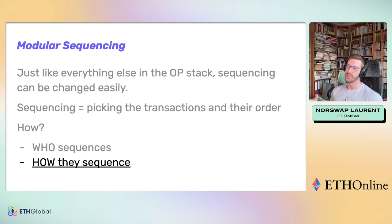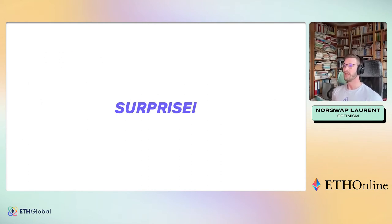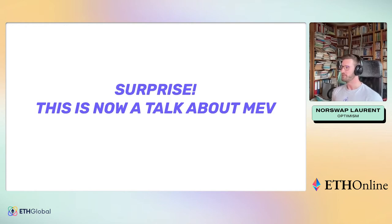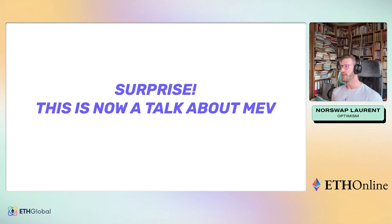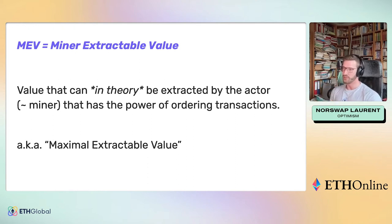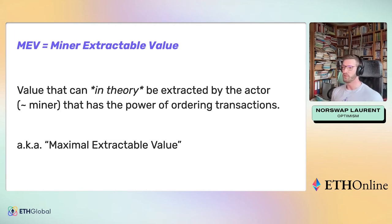Second topic on modular sequencing: what can we sequence? Well, how do we pick the transactions — and surprise, this is actually a talk about MEV. MEV is value that can, in theory, be extracted by the actor that has the power of ordering transactions. In Ethereum proof of work, that was the miners. In proof of stake, it's the validators. On a layer two like Optimism, it's the sequencer. Some people also call it maximal extractable value.